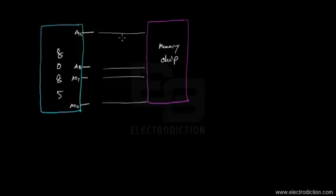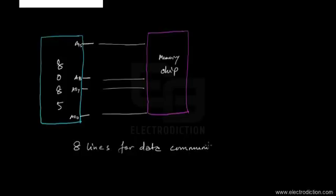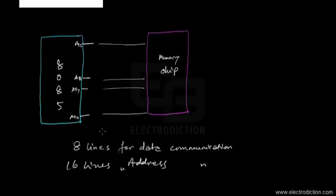Let's say we are interfacing with multiple memory chips. Some of the higher address lines will be used to control certain devices and interface with multiple memory chips. The 8085 has only eight lines for data communication — that is the lower order address data bus — and it has only 16 lines for address communication. Apart from all these, it doesn't have any other input-output ports.